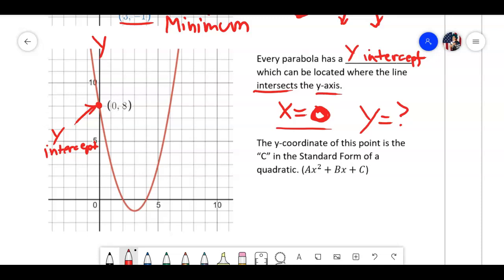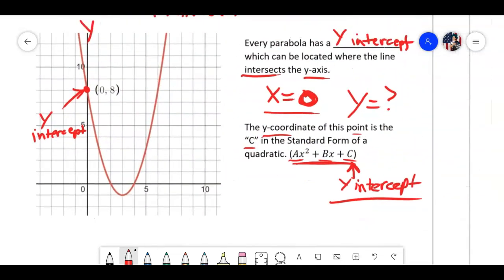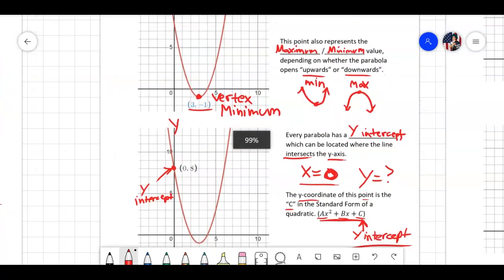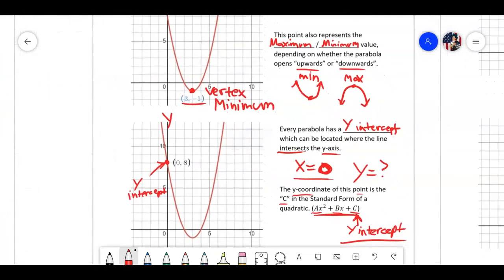So next part: the y-coordinate of this point is the c in this standard form. So you're going to see equations that are y equals some number x squared, some number x, plus some number. We call it ax squared plus bx plus c. The c, this last number, is always the y-intercept. That's how it works.